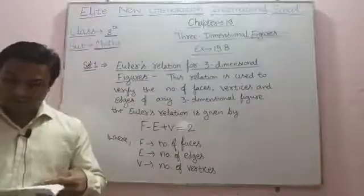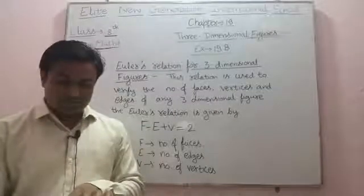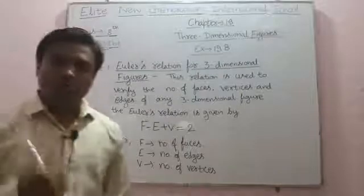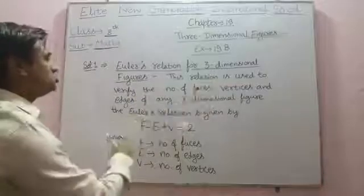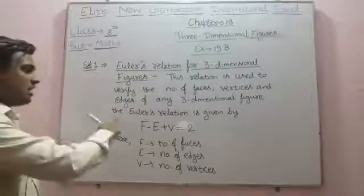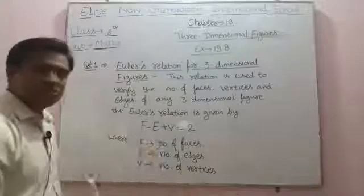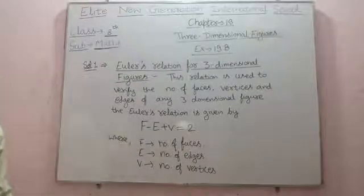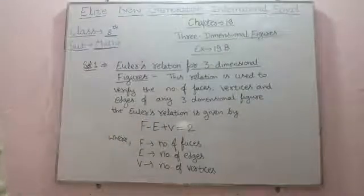See question number one of exercise 19b: define Euler's relation between the number of faces, number of edges, and number of vertices for various three-dimensional figures. Euler's relation for three-dimensional figures is used to verify the number of faces, vertices, and edges of any three-dimensional figure. The Euler relation is given by this formula: F minus E plus V equals 2, where F stands for number of faces, E stands for number of edges, and V stands for number of vertices. We can use this formula for verifying the number of faces, number of edges, and number of vertices.